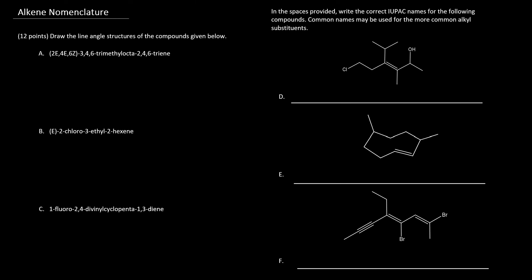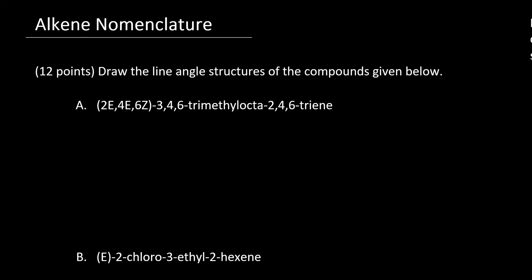Exam review question related to alkene nomenclature. On the left, we're asked to draw the line angle structures of the compounds given below, given the name. And on the right, we're given the structure and we're asked to name the compound. Alright, let's get into it.